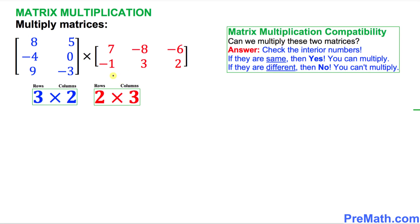Before we multiply these two matrices, we are going to check the matrix multiplication compatibility — in other words, can we multiply these two given matrices? To check compatibility, let's focus on the interior numbers. As you can see, these two numbers are the same. If they are the same, yes, we can multiply. If they are different, then we can't.